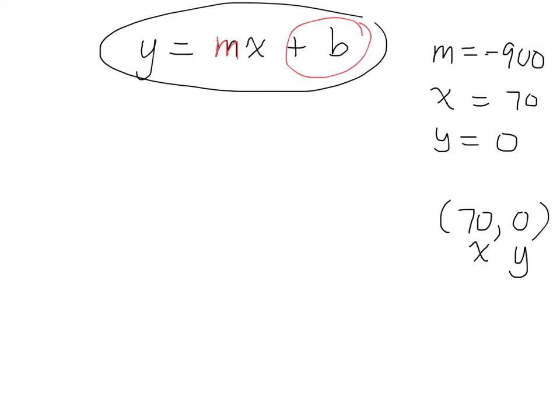So, y is 0 equals? What's m? Negative 900 times x. What's x? 70 plus b. What's negative 900 times positive 70? Austin? Yeah. Negative 63,000 plus b.